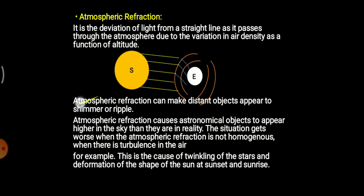Atmospheric refraction can make a distant object appear to shimmer or even ripple. For instance, if an individual is residing near the earth's surface and trying to see a celestial object like the sun, when a ray of light is travelling through the different layers of atmosphere, the person will see that object shimmer — meaning it will appear like glimpses or a sort of twinkling.